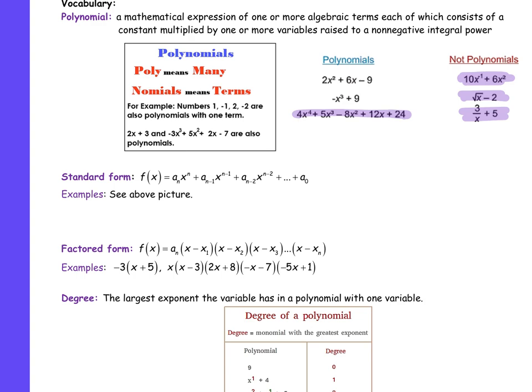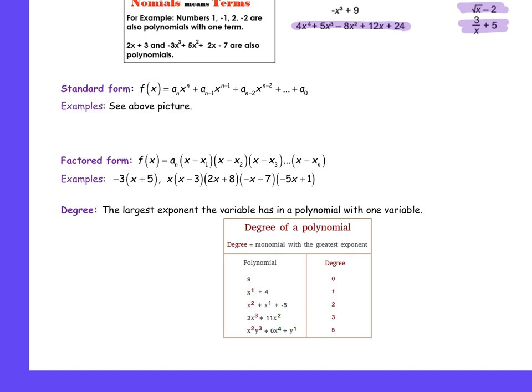Factored form, just kind of like a quadratic. Factored form is the same as a quadratic because a quadratic is a polynomial, just degree two. Any questions so far? The vocabulary is pretty simple. Degree is the largest exponent, the largest exponent the variable has in a polynomial with one variable.